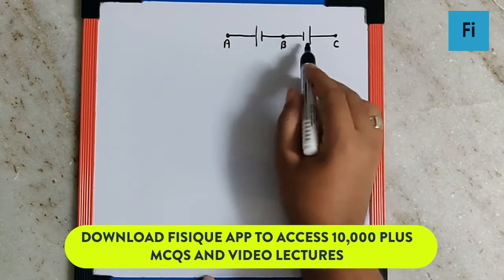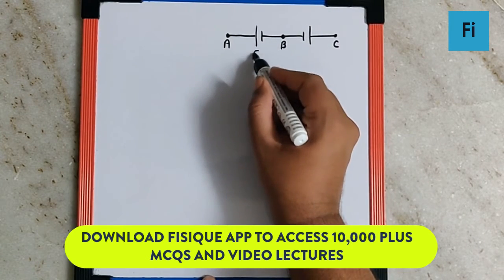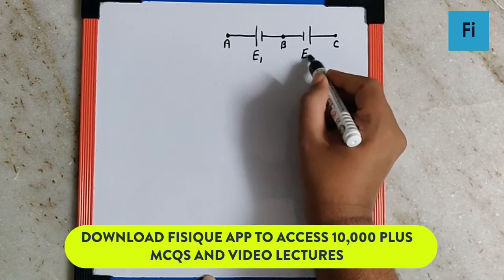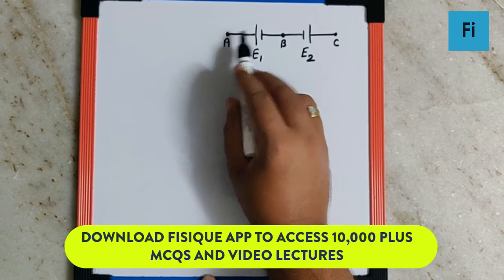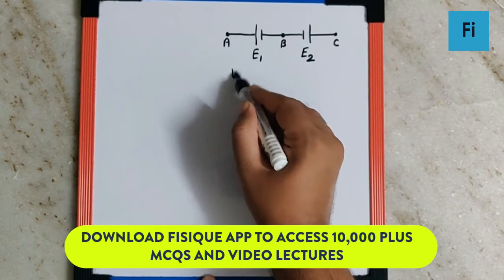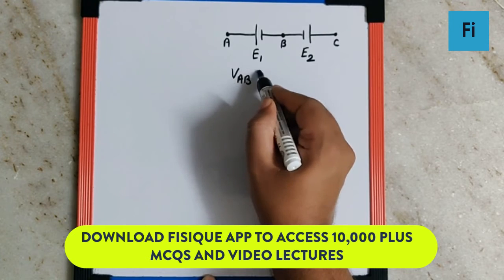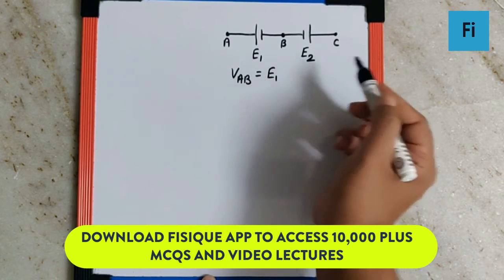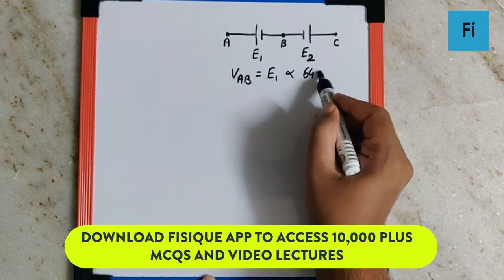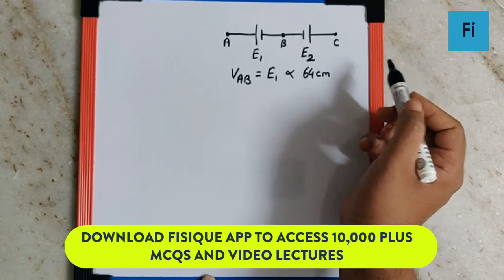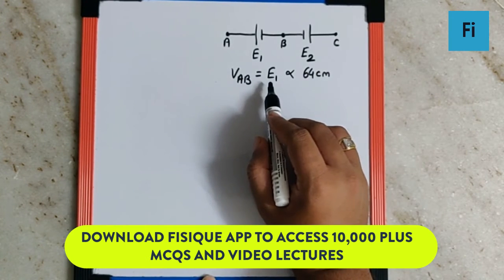Now let's call the two EMFs which can be seen over here as E1 and E2. So when the balance is found between AB, we can say VAB is equal to E1, and that is balanced at 64 cm.